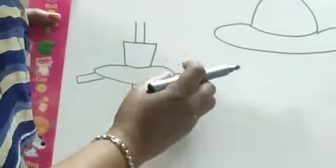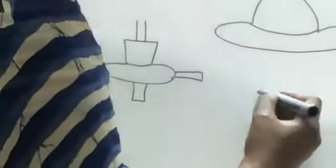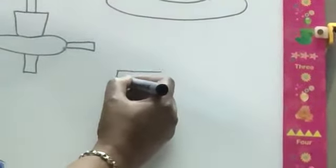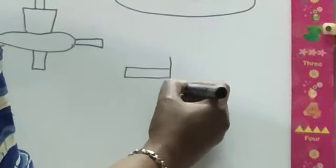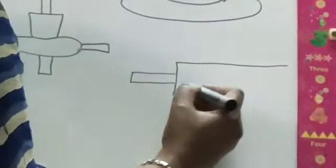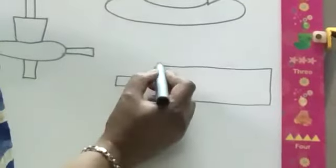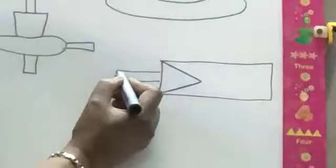And now I am going to draw the bat. It is very easy. Two sleeping lines. Standing. Two more sleeping lines. Join them. And it is bat.